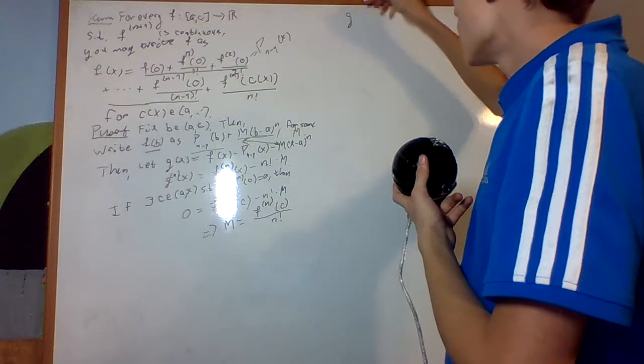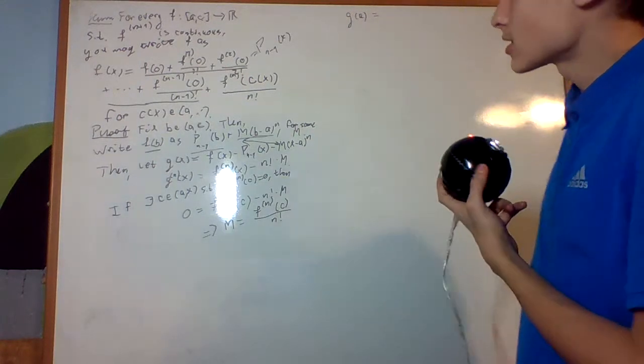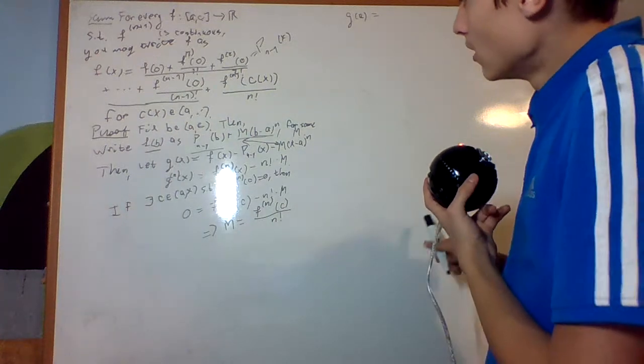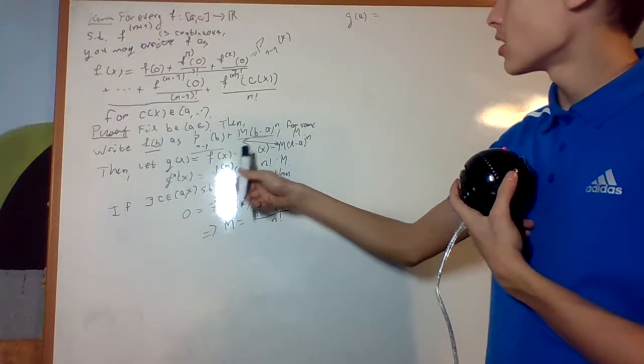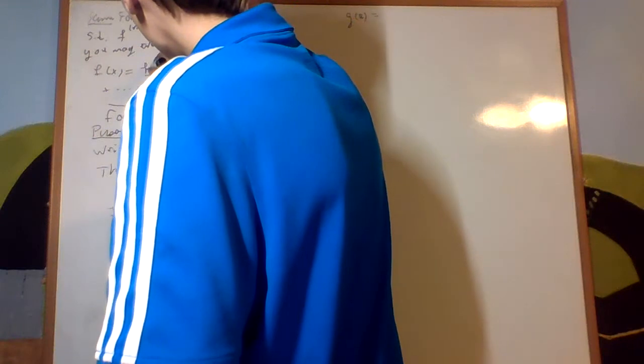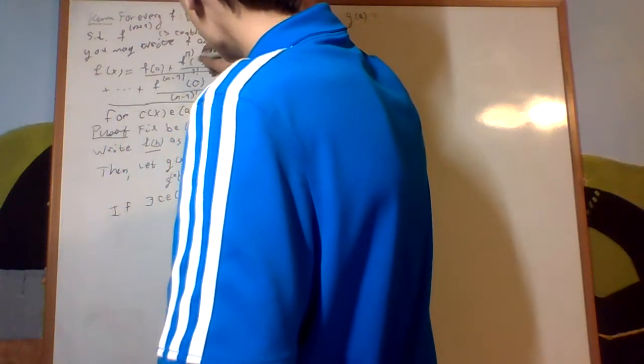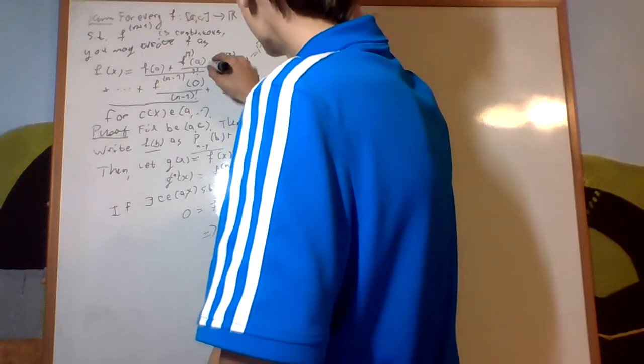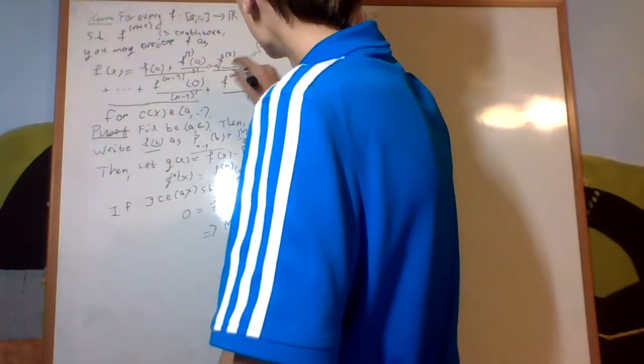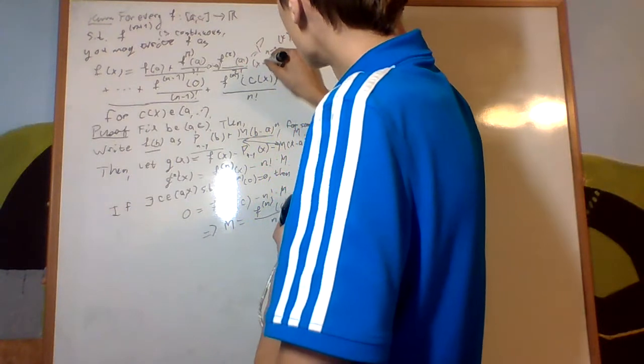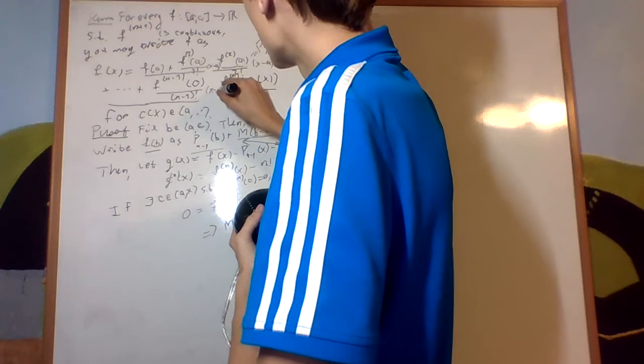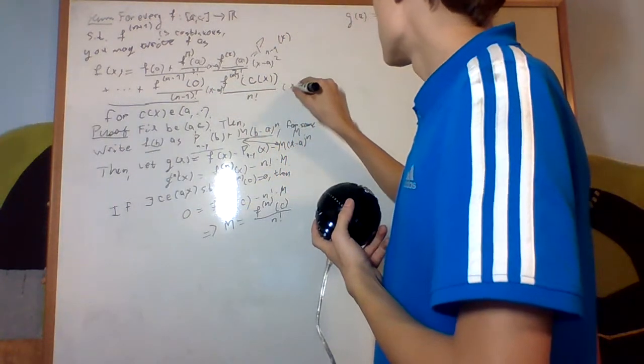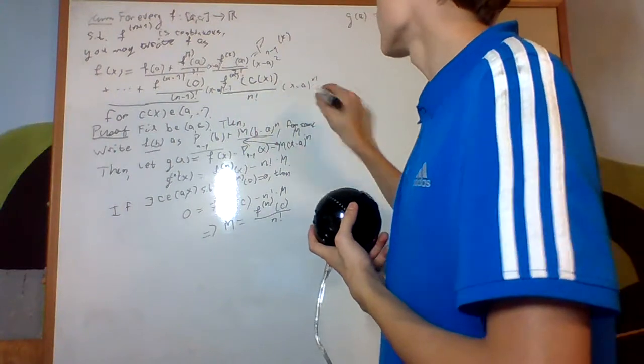So, what's g of a? What's obviously going to be, it's going to be f of a minus, if you look at p of x, I should do a there, just an a. So, x minus a, f of a, x minus a squared, x minus a to the n, right there is going to be x minus a to the n.